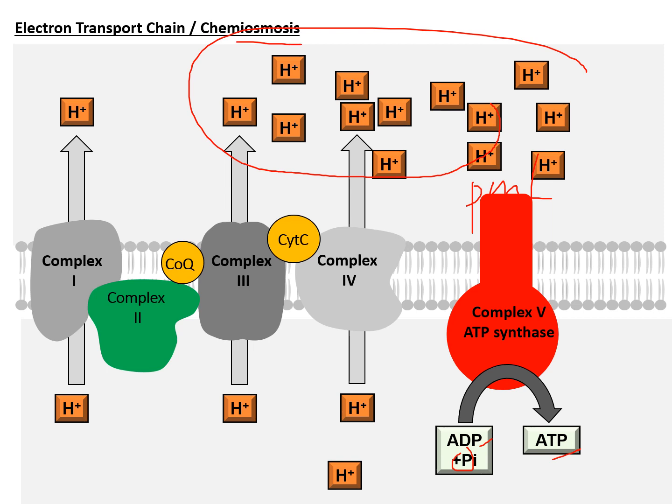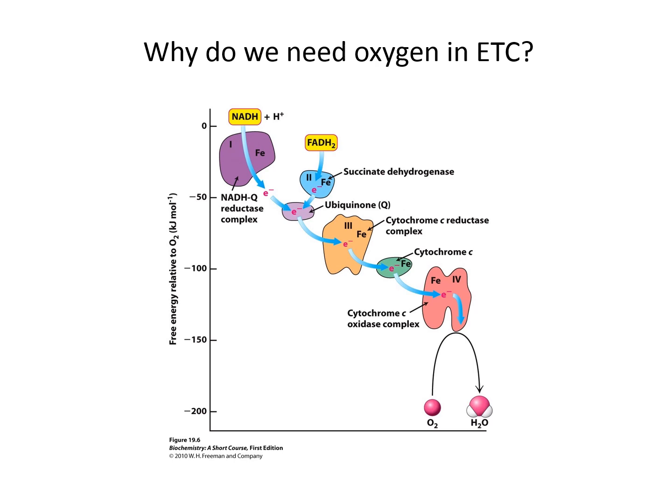Why do we need oxygen in the electron transport chain? Because oxygen is the final electron acceptor. Without this magnet constantly pulling electrons along the series, we can't build up the proton gradient, and subsequently there will be no ATP production.